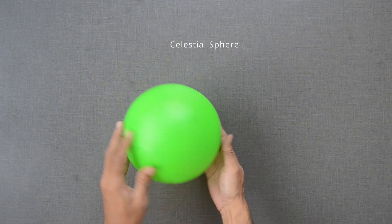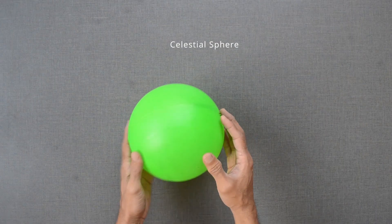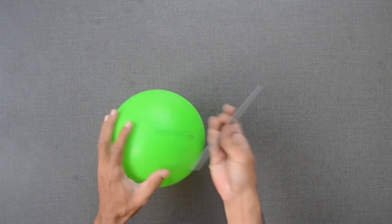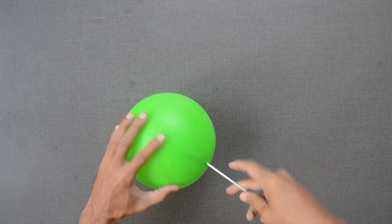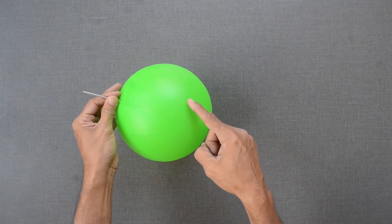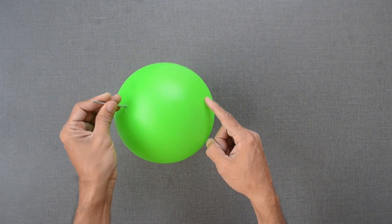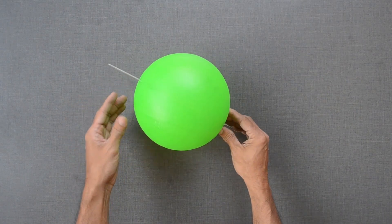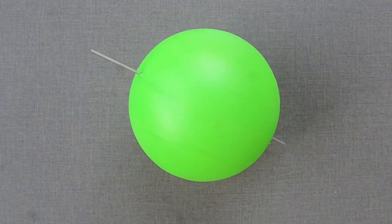Instead of a transparent sphere, we will use this plastic ball to represent a celestial sphere. In this activity, we will reverse the role. Instead of rotating earth, we will instead rotate the sky, just like we feel it every day and night.